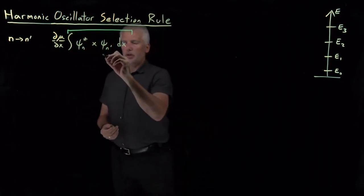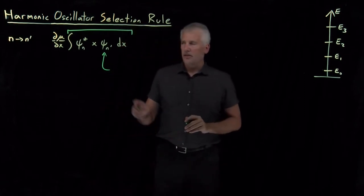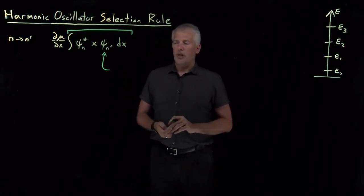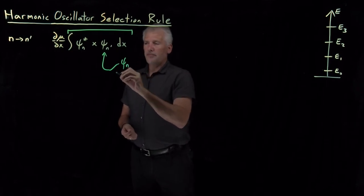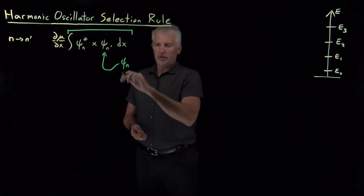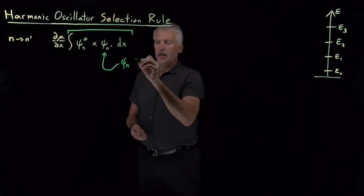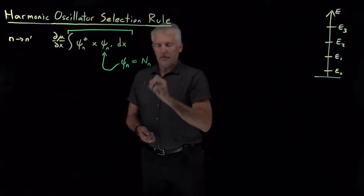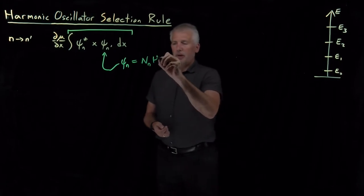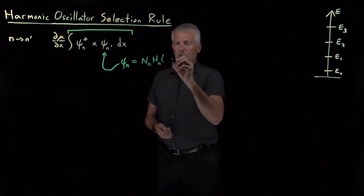To do that, we're going to have to recall that these wave functions for the harmonic oscillator take the form: the n-th wave function, n or n prime, whatever this harmonic oscillator quantum number is, looks like some normalization constant which is different for every n, and then a Hermite polynomial which is a function of x.